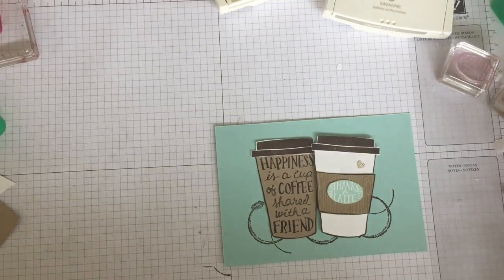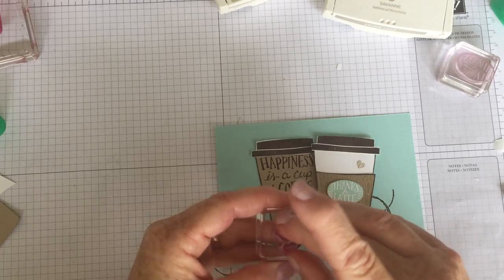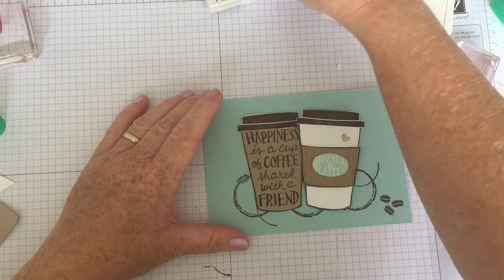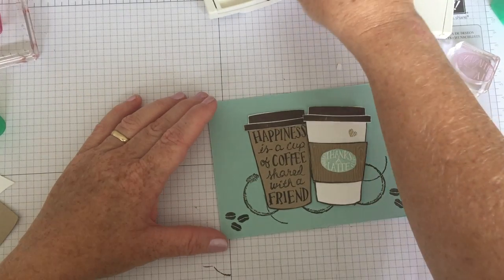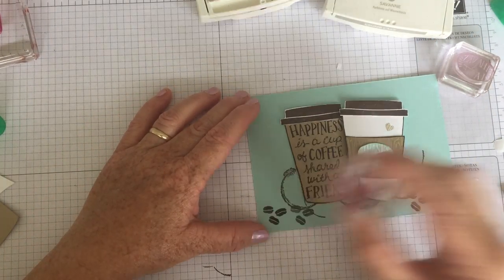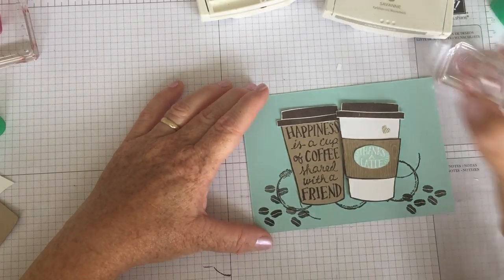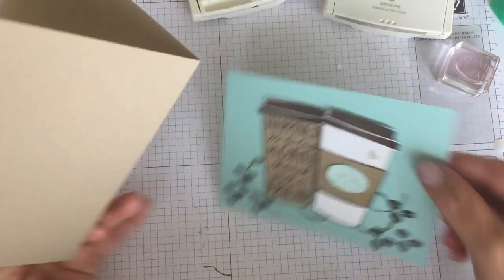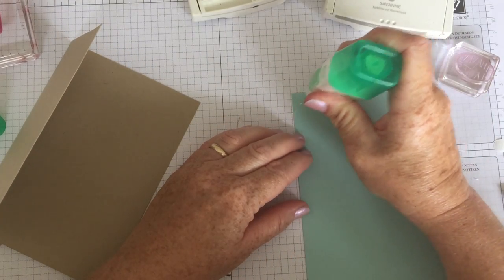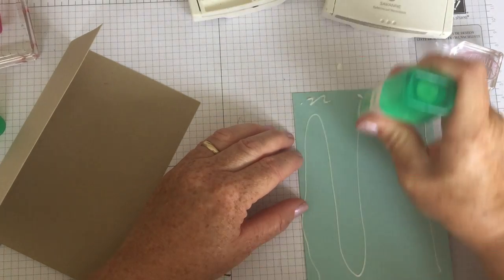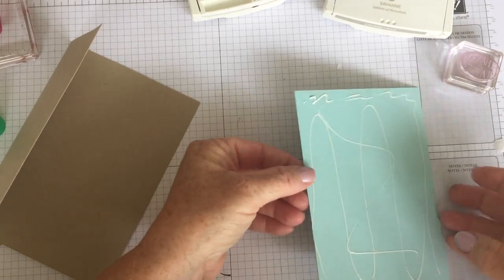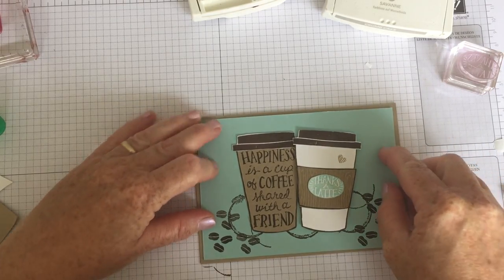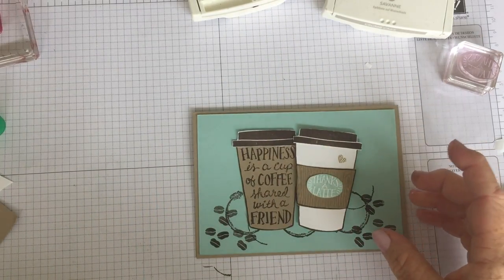What I've done as well is I have stamped the coffee beans around it. Can't have a cup of coffee without coffee beans, so they're quite an important part of the card. Let's pop them on, and I've just done it randomly where I'd like it to go, where I think it looks okay. You can have as many or as few as you want. Okay, so I've got my coffee beans, and then I'm just going to put my layer onto the card base. A little bit more Tombo. There we go, on it goes like so. And then I've got my white layer to go inside.